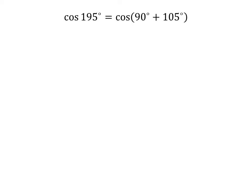195 degrees is equal to 90 degrees plus 105 degrees. So, cosine of 195 degrees is equal to cosine of 90 degrees plus 105 degrees.